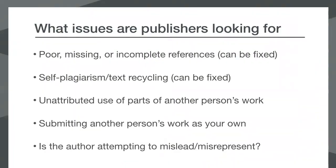So when publishers are running their similarity check, what are they looking for? They might be looking for poor, missing, or incomplete references — these can be easily fixed. They might be looking for self-plagiarism, also known as text recycling, where somebody uses their own previous work in another context without citing it. This can be fixed and is often an error someone doesn't realize they need to address. Other more serious things publishers might look for include unattributed use of parts of another person's work, submitting another person's work as their own, or deliberately attempting to mislead or misrepresent their findings.